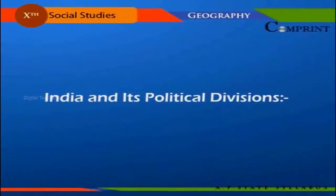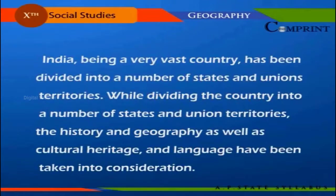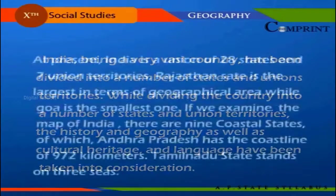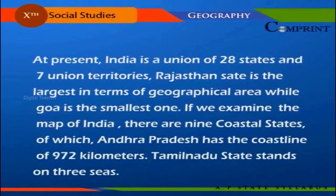India and its political divisions — India, being a very vast country, has been divided into a number of states and union territories. While dividing the country, history, geography, cultural heritage, and language have been taken into consideration. At present, India is a union of 28 states and seven union territories. Rajasthan is the largest state in terms of geographical area, while Goa is the smallest.